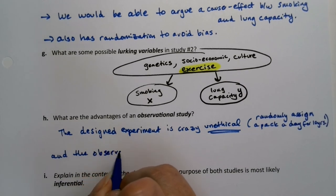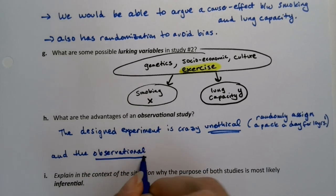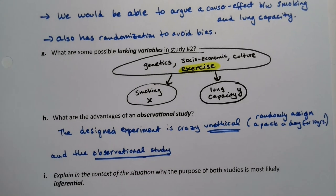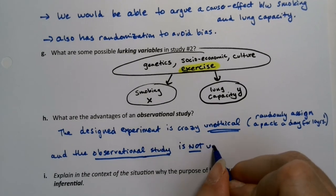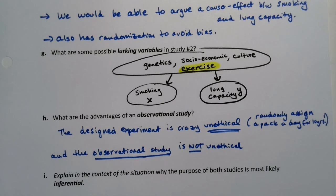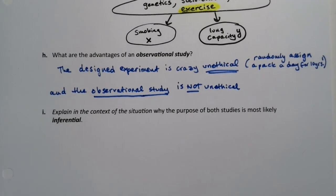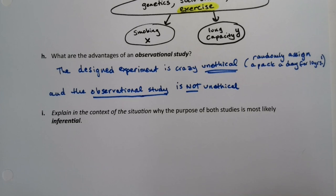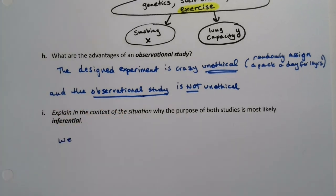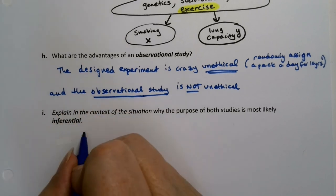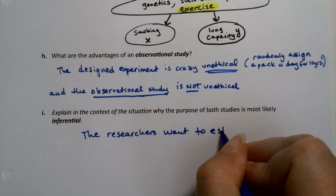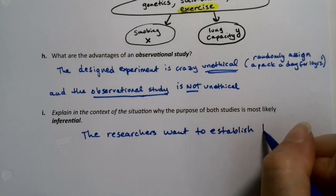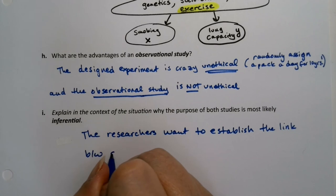The observational study is not that. It's just asking people, 'Have you been smoking for the last 10 years? If so, can we measure your lung capacity?' Why would the purpose of both studies most likely be inferential? Because you're trying to establish a link between smoking and lung capacity for all people, not just for these 100 women. The researchers want to establish the link between smoking and lung capacity.